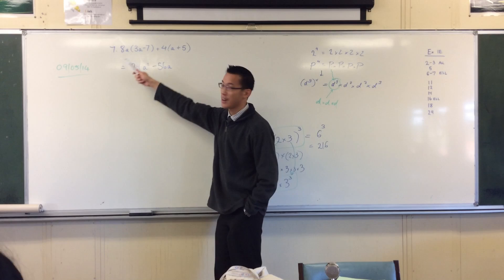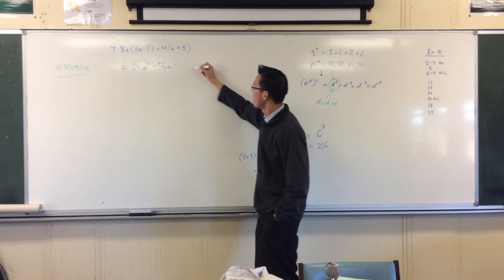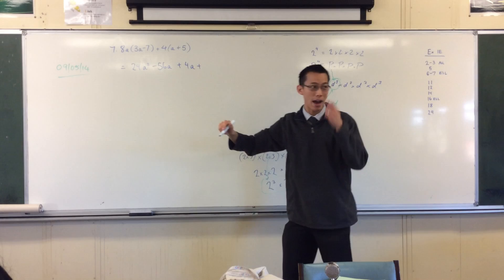So one guy's gone to one house. Now we've got another guy at a different house. So he says hi to the first guy, 4a. He says hi to the next one. 4 times 5 is 20.